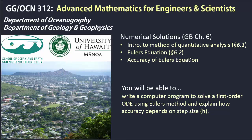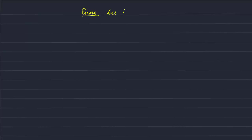In the previous video, we covered how to apply Euler's equation to solve a first-order linear ODE. So now let's talk about errors. You should see pages 294 to 296 of Greenberg.